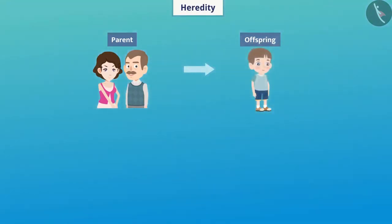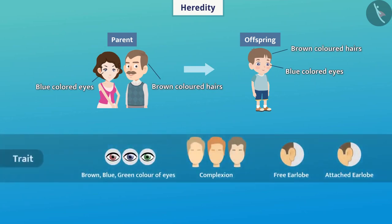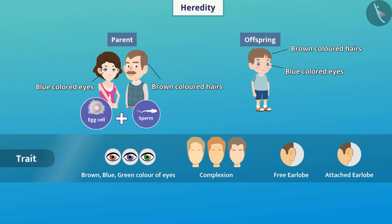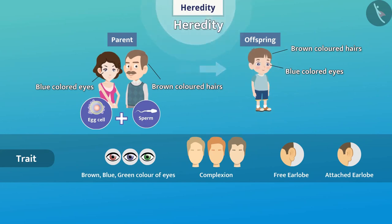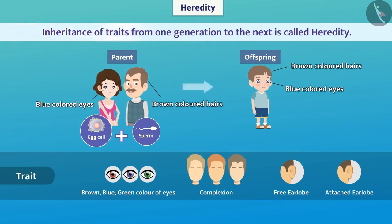When we talk about a child being similar to its parent, we mean the characteristics which are similar between parent and offspring. Various features that we see are called traits. In the process of reproduction, these traits are transmitted from one generation to the next through gametes. The transfer of various traits from parent to child is called heredity. In other words, inheritance of traits from one generation to the next is called heredity.